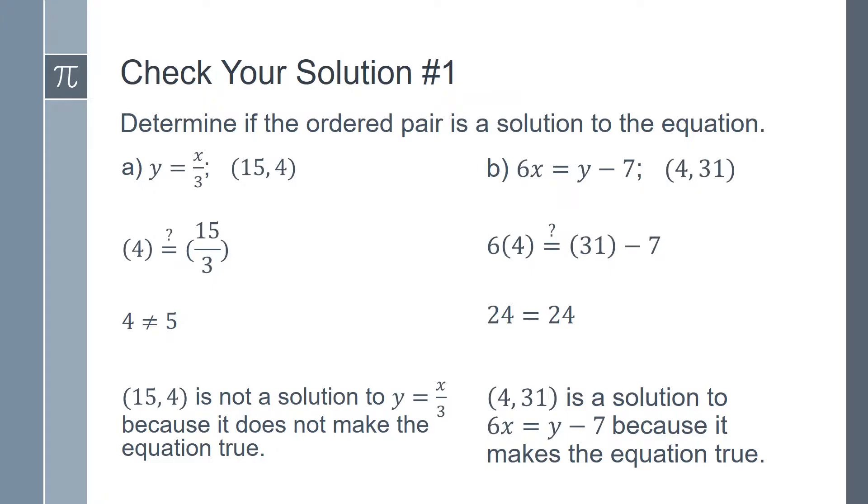So for part a, we have 4 on the left hand side and 15 over 3 on the right hand side. 15 over 3 is 5. We know that 4 does not equal 5, so 15, 4 is not a solution to y equals x over 3 because it does not make the equation true.